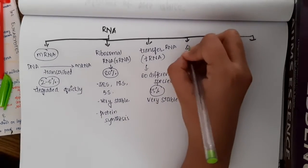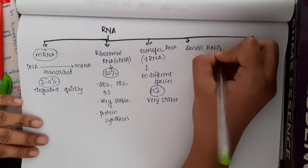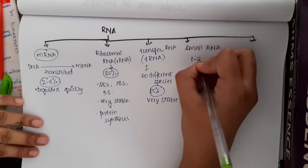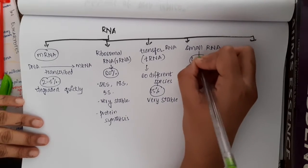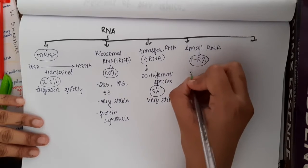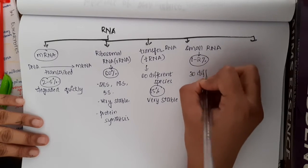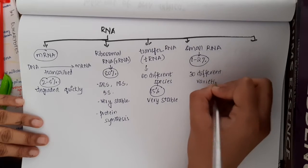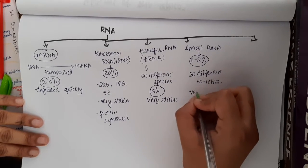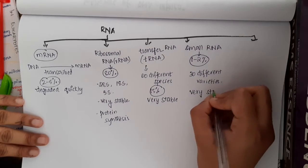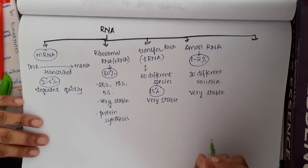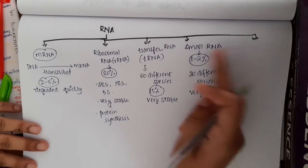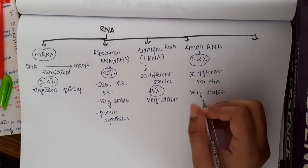Then the fourth type of RNA are small RNAs which constitute about 1-2% of total RNAs. There are about 30 different varieties of small RNAs present, and these small RNAs are also very stable.